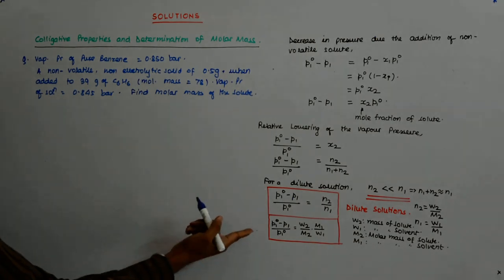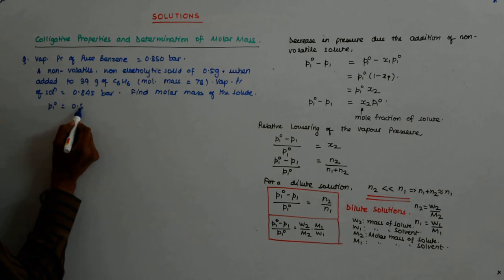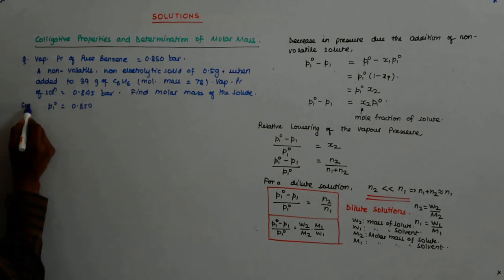I will immediately use the working equation. My p1 naught is 0.850 and my p1 is 0.845.